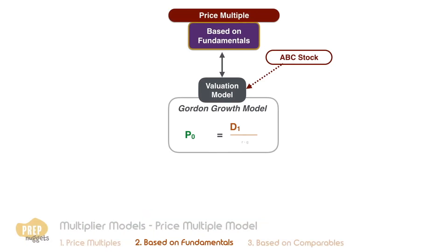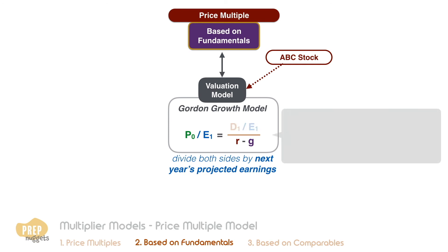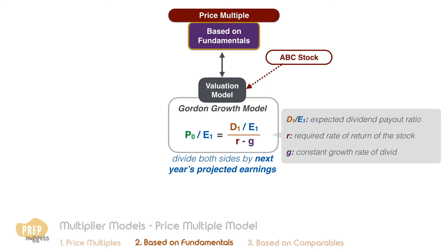To understand fundamental price multiples, consider the Gordon Growth valuation model. If we divide both sides of the equation by next year's projected earnings E1, we get this equation. On the right side, we have the forward dividend divided by forward earnings in the numerator — this is the expected dividend payout ratio for the next period. On the left side, we have the current price of the stock divided by the forward earnings. We call this the forward, or leading, P/E ratio for the stock, because it's based on expected earnings next period.